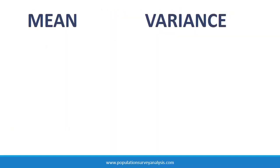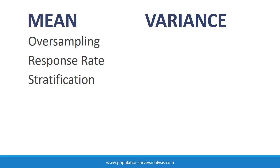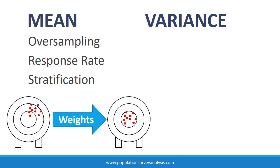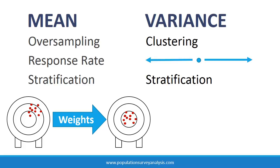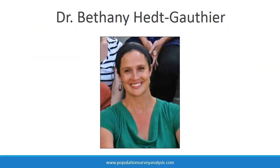Several characteristics of complex survey design can bias mean and variance estimates. Any survey design characteristic which affects the probability of selection — including stratification, oversampling, and response rates — must be accounted for with the application of sampling probability weights in descriptive data analysis. Descriptive data analysis must also adjust for clustering by widening variance estimates to avoid Type 1 errors. Accounting for stratification can slightly narrow confidence intervals in analyses of multiple strata, but the effect is usually negligible, so the effect of stratification on variance can be ignored in descriptive data analysis. This presentation was based on learning materials developed by Dr. Bethany Het-Gauthier.